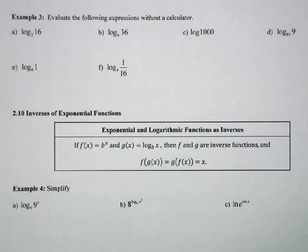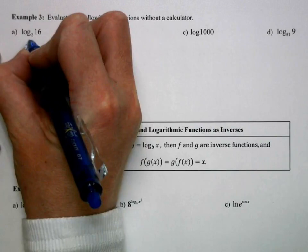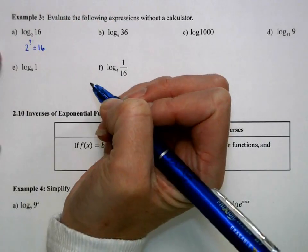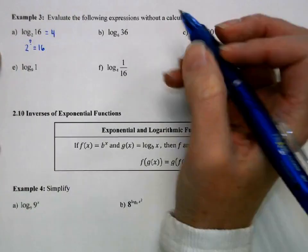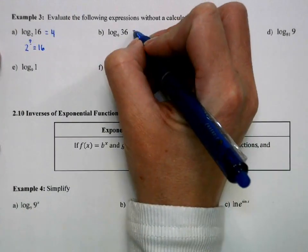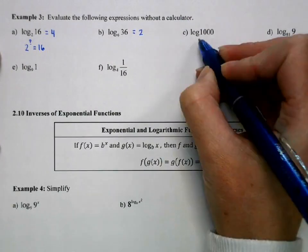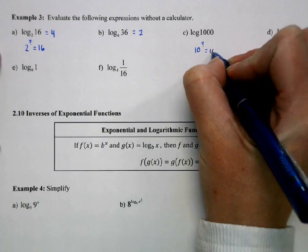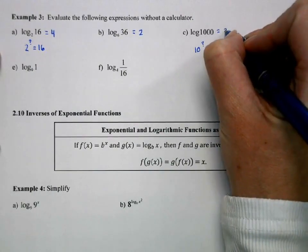Next we're going to evaluate some simple logs without a calculator. Calculators can certainly help us out, but we want to understand what the logarithms are actually saying. So this is saying log base 2 of 16. We're saying 2 to what power gives me 16? Well that's going to be to the 4th power. 6 to what power is 36? That's obviously going to be 2. This is the same as 10 to what power is 1,000. So log of 1,000 is 3.